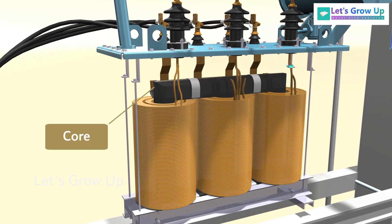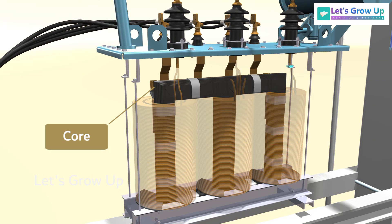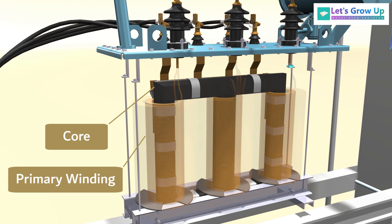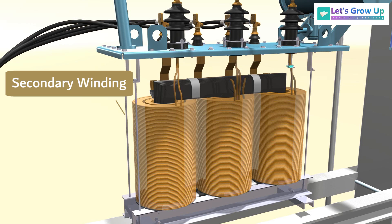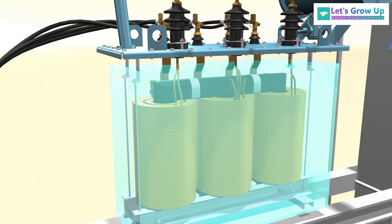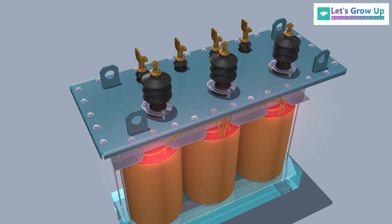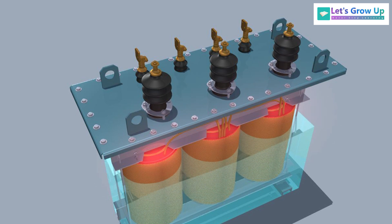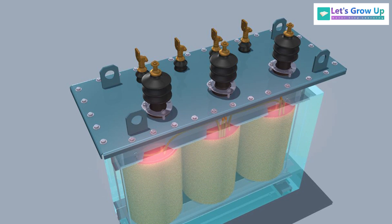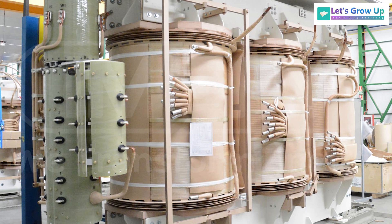A distribution transformer consists of a core, primary winding, secondary winding, and a tank filled with insulating oil. The core and windings are responsible for the voltage transformation, and the oil serves as both a coolant and an insulating material. Some distribution transformers may also have tap changers to adjust the output voltage.